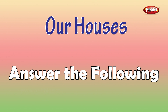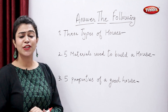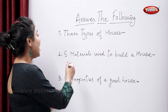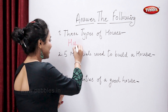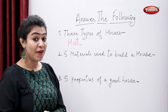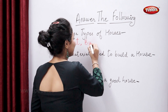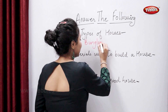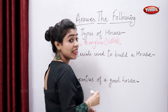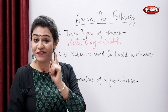Answer the following: three types of houses. So tell me, which are the three types of houses? Hut, bungalow or villas, and the last, apartment or flats.